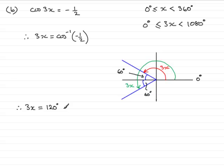So, I've got the red 3x, 120 degrees. I now need the green 3x. So, that's going to be 180 degrees plus the additional 60 degrees, and that's going to make 240 degrees.